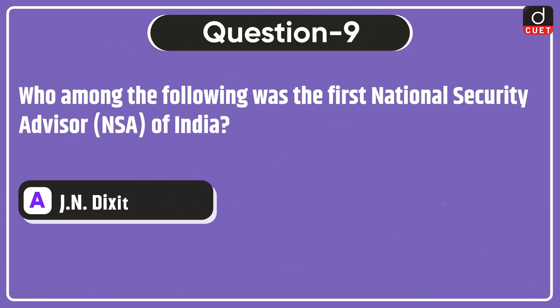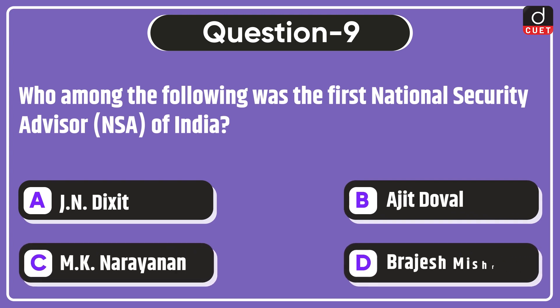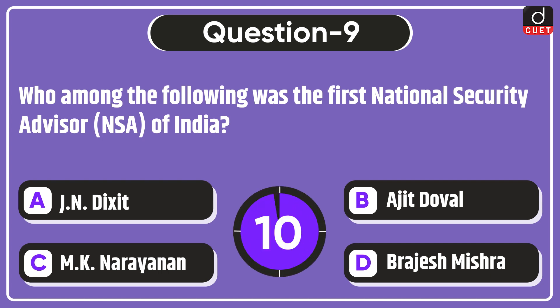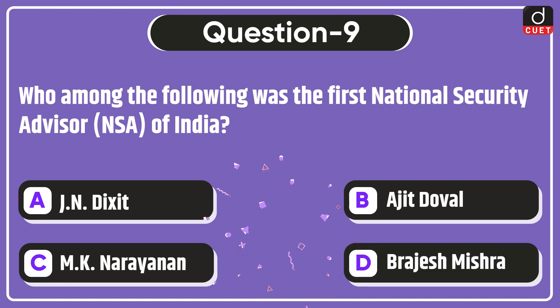Next question: who among the following was the first National Security Advisor of India? J.N. Dixit, Ajit Doval, M.K. Narayanan, or Brajesh Mishra? The correct answer is option D — Brajesh Mishra.